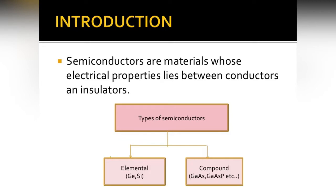In this video we are going to learn about the introduction to semiconductors. Semiconductors are materials whose electrical properties lie between those of conductors and insulators. From the name itself, 'semi' means half — its properties lie somewhere between conductors and insulators. Alternatively, it can be defined as a substance which has a resistivity in between those of conductors and insulators.